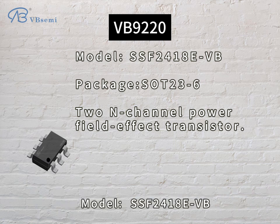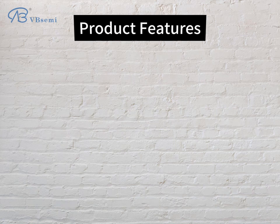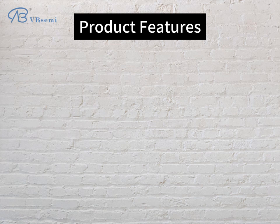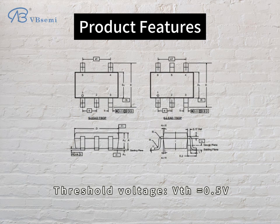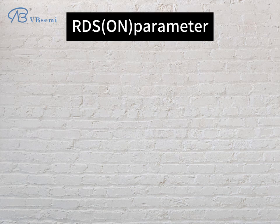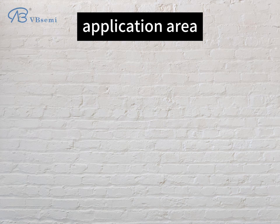Model SSF2418 EVB product features: Rated Voltage VDS = 20V, Maximum Current ID = 6A, Threshold Voltage VTH = 0.5V. RDS(ON) parameter at 4.5V and 20V: RDS(ON) is 24mΩ.